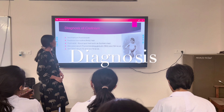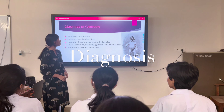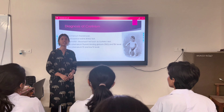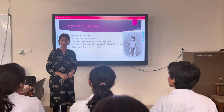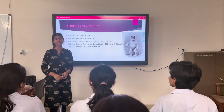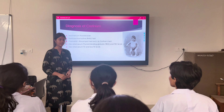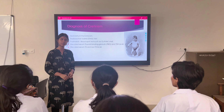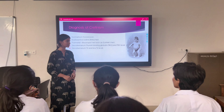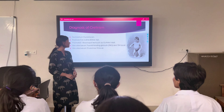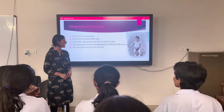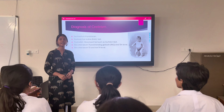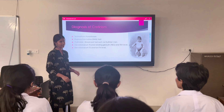Diagnosis of cretinism: we have a thyroid scan and a radioactive iodine test, in which radioactive iodine is used to detect any abnormalities in the thyroid. Then we have postnatal blood spot tests such as Guthrie's test, where we look for elevated thyroid-binding globulin and TSH levels, and elevated serum T3 and T4 levels.